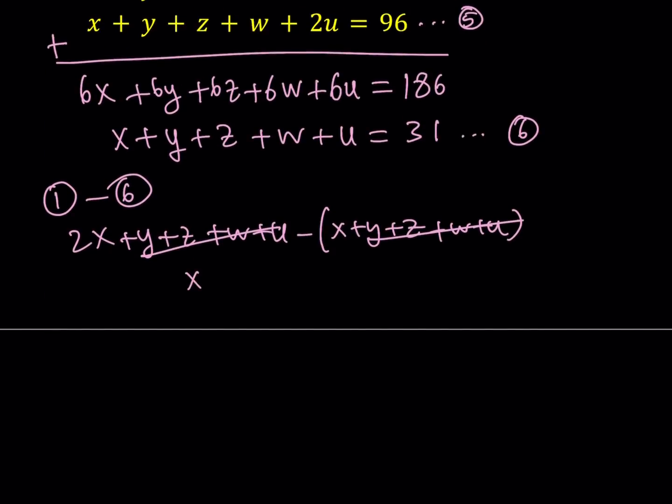Okay, great. So, X is equal to negative 25. It's not something that I expected. I was hoping to get some positive solutions, but I guess it's not going to work. Anyways, so we got it. So, now let's go ahead and do two minus six.